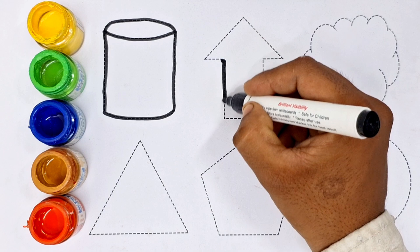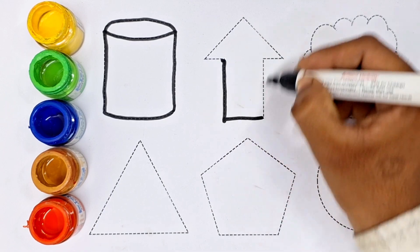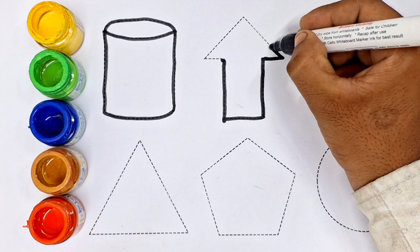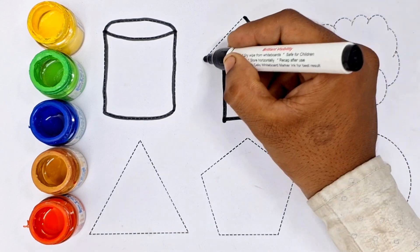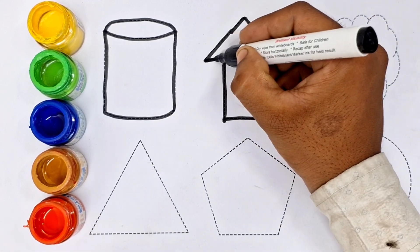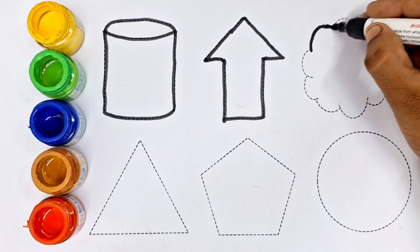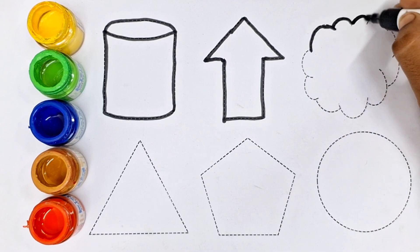This shape, what do you think? Which shape is? The shape of the arrow. This shape is the shape of the arrow.